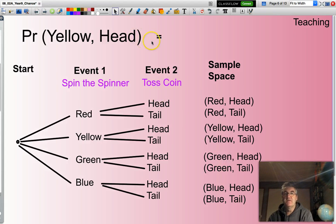So I can say that the probability of a yellow followed by a head is one out of eight. Well, eight is the number of outcomes in my sample space.